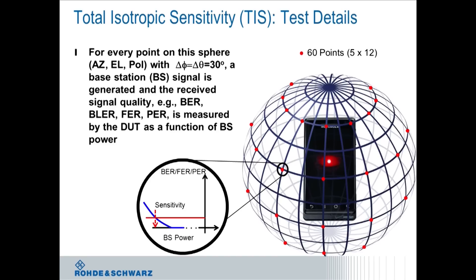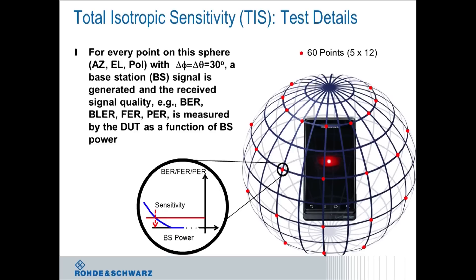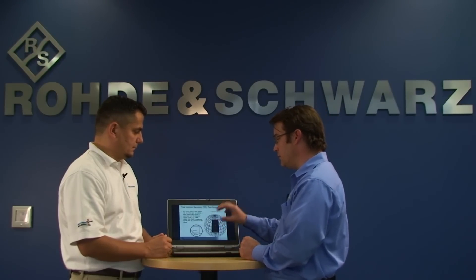But let's go back to the receiver test for just a minute. This is where you test on 60 points around the sphere, the receiver or the sensitivity as a function of base station power. So the long testing is really the sensitivity testing and the mechanical moving or the positioning of the device as well as the test antenna. It's just a very, very small fraction of the entire test time.